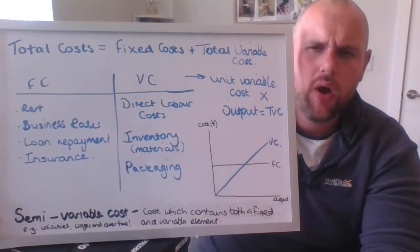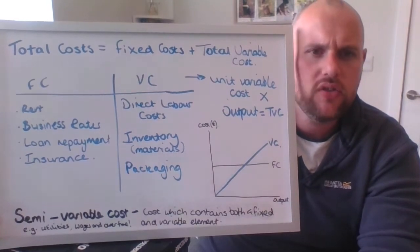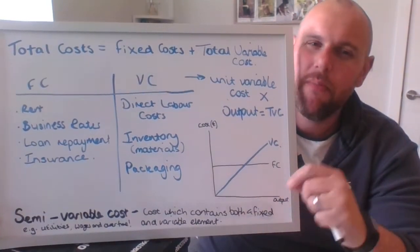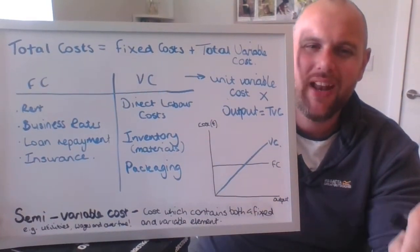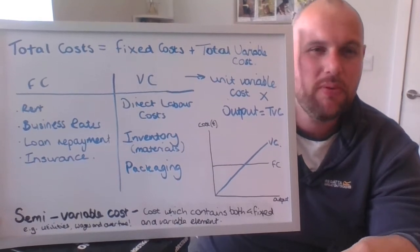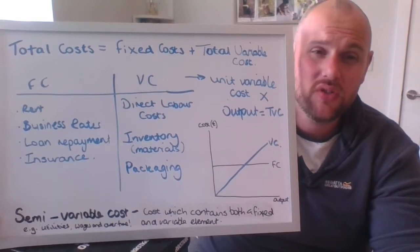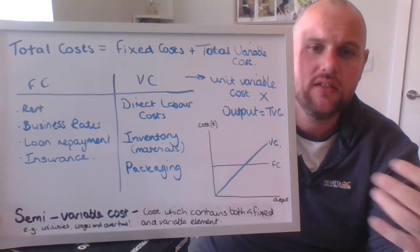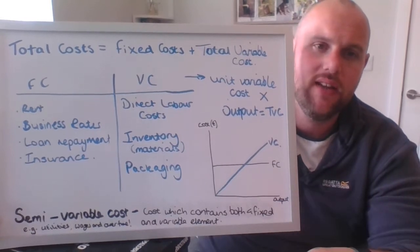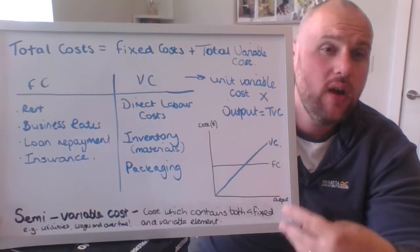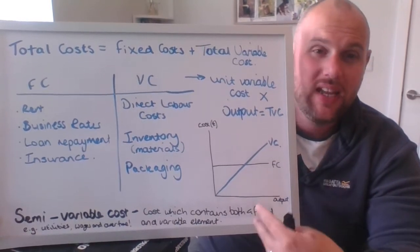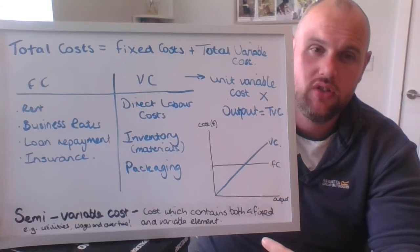Now, people might say rent does go up — and it does — but it might not go up in relation to output. It goes up because a landlord wants to charge more, or inflation or other factors cause it to increase. When we link it to output, it doesn't change.